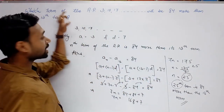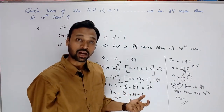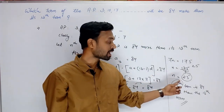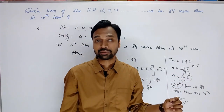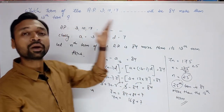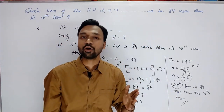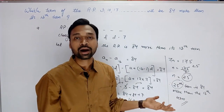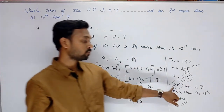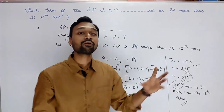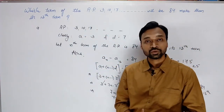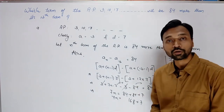Aur yahan 13th term ki jagah koi aur term aa jaaye, toh us term mein aap A25 nikalenge. Aap yahan bhi kar sakte ho — 13th term nikaalo aur usme 84 add kar do. A13 nikaloge aur usme 84 add karoge toh bhi same answer aayega. But abhi question mein bas position poochi thi toh humne position bata di — 25th. Agar woh term ki value poochhe toh woh bhi nikaal sakte hain. I hope it is clear. Thank you so much for watching the video and bye.